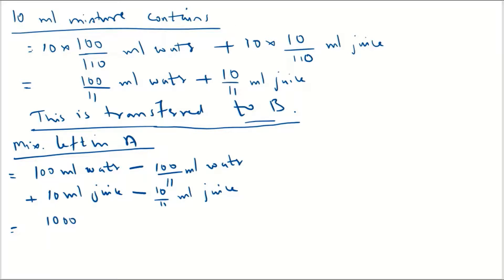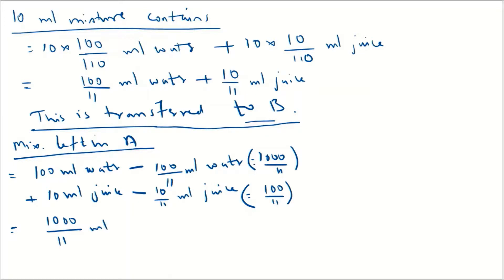After subtraction, the water remaining in A is 1000/11 ml of water, and the juice remaining is 100/11 ml of juice. So finally, glass A contains 1000/11 ml of water plus 100/11 ml of juice.